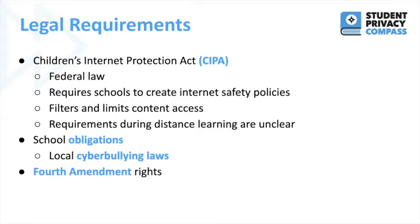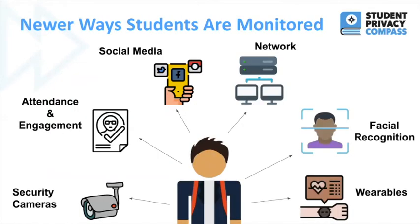So the what and how schools monitor their students have very important implications. The responsibility schools and teachers have to monitor and supervise their students is not new, but schools' increased ability to monitor students is. Here are examples of the newer ways students are being monitored. Teachers have always tracked and monitored attendance and engagement, but in a hybrid or fully online learning setting, student online information such as login or website activity could now be monitored rather than just physical presence at schools.